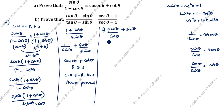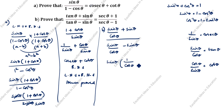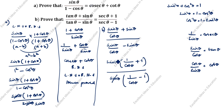So we have sin theta divided by cos theta plus sin theta, divided by sin theta divided by cos theta minus sin theta. We will take sin theta outside — there is one sin theta in the numerator and one in the denominator. Open the bracket: 1 by cos theta plus 1, divided by 1 by cos theta minus 1. The sin thetas cancel. Now 1 by cos theta is secant theta, so we get secant theta plus 1 divided by secant theta minus 1.